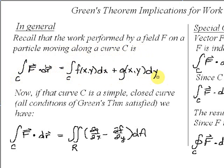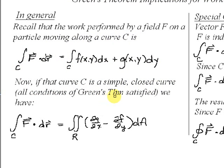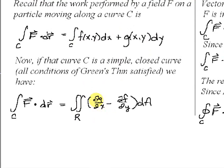Green's theorem, in the case that C is a simple closed curve and all of the conditions of Green's theorem are satisfied, tells us that we can then rewrite this integral as the double integral over R of the partial derivative of g with respect to x minus the partial derivative of f with respect to y. We'll be using this formula, Green's theorem, to evaluate the work performed by a vector field.